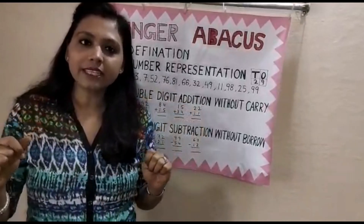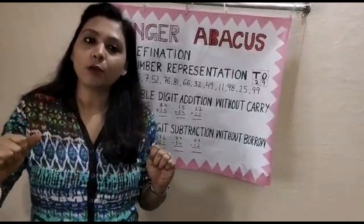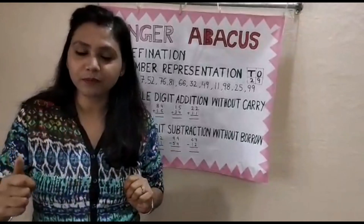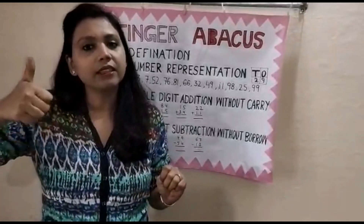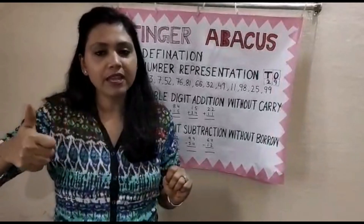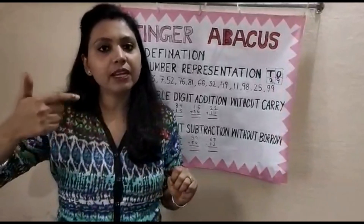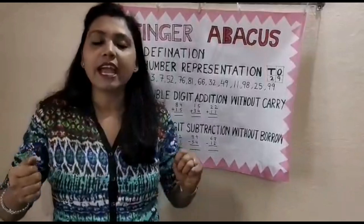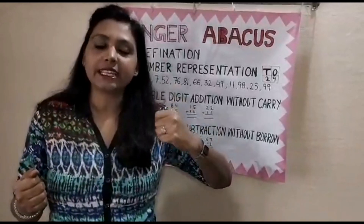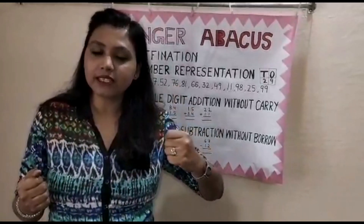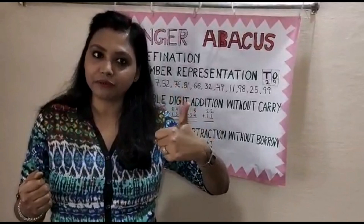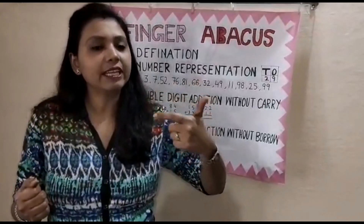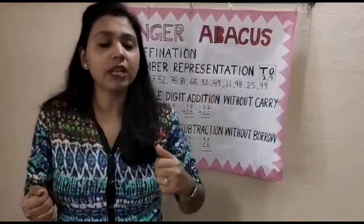Now I will tell you the value of each finger. In the 1's place, the thumb has the value 5 and each finger has the value 1. And in the left hand, that is the 10's place, the thumb has the value 50 and each finger has the value 10.